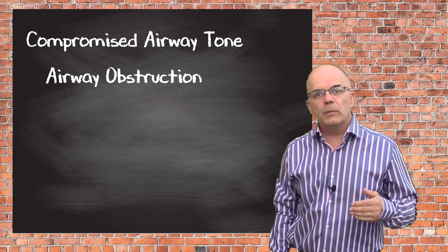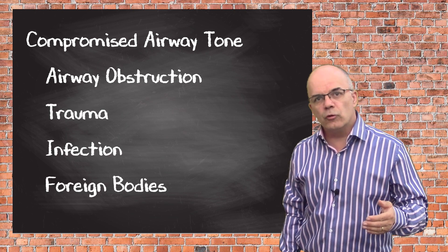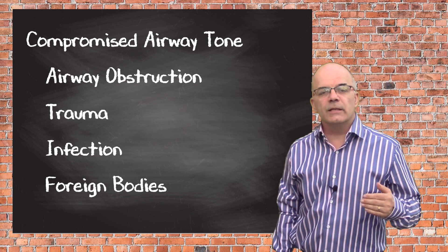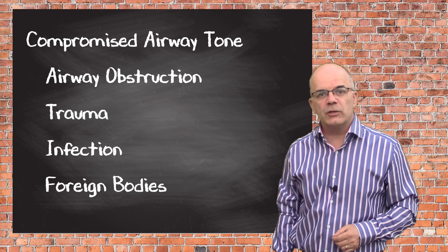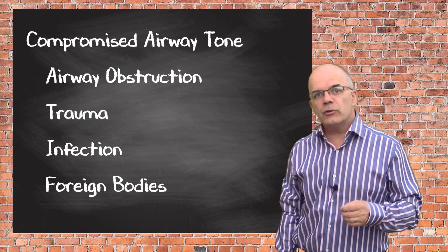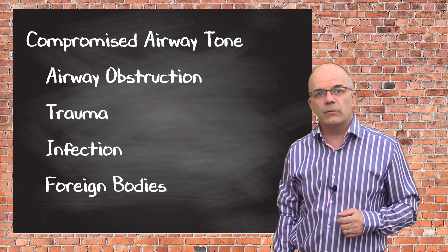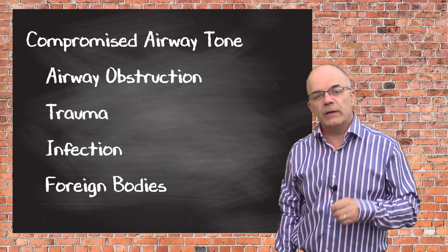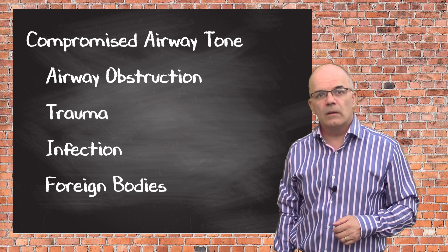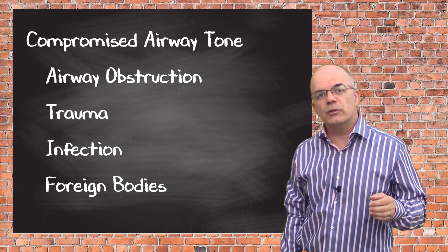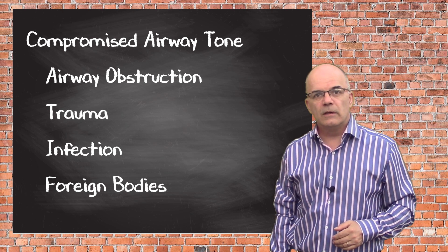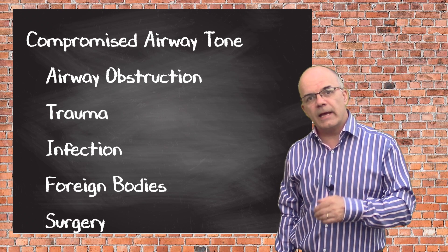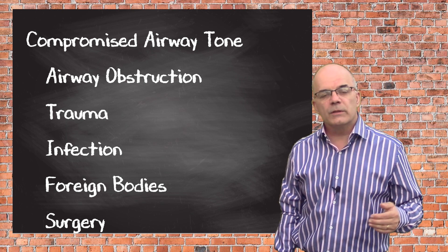The airway can also become obstructed for a number of other reasons, such as trauma, infection or foreign bodies. It is in these cases that the airway may also need to be managed more formally. The endotracheal tube is considered the gold standard in these situations, although sometimes the hazards with this procedure have led to this being questioned in the past. Remember also that airway tone can be reduced as a consequence of an elective procedure, for example when the patient goes for surgery and needs to be rendered unconscious, then that airway needs to be protected whilst the surgery is ongoing.